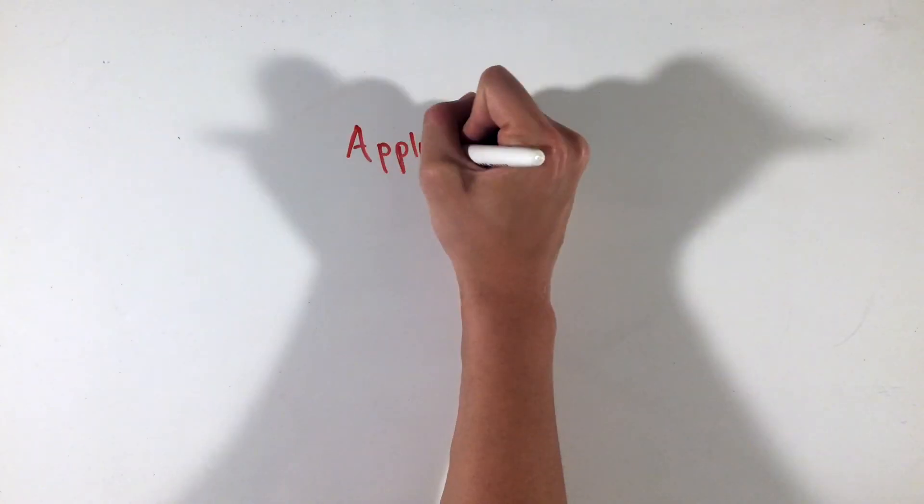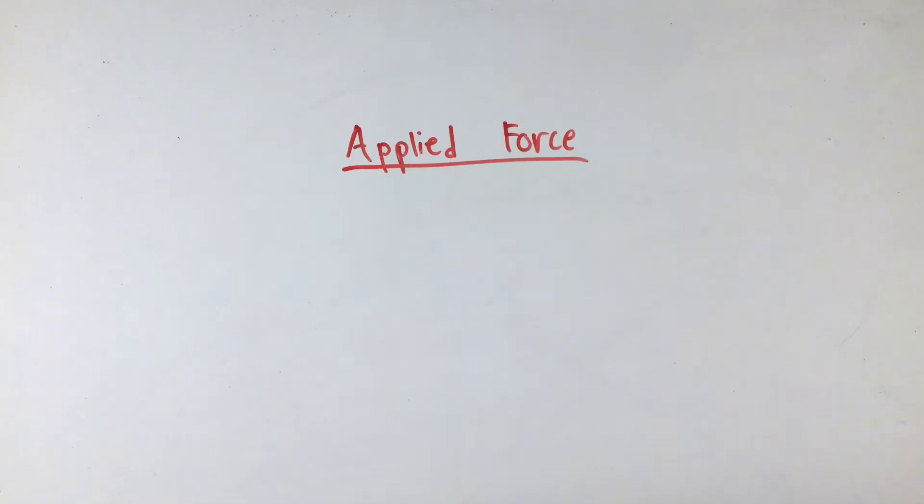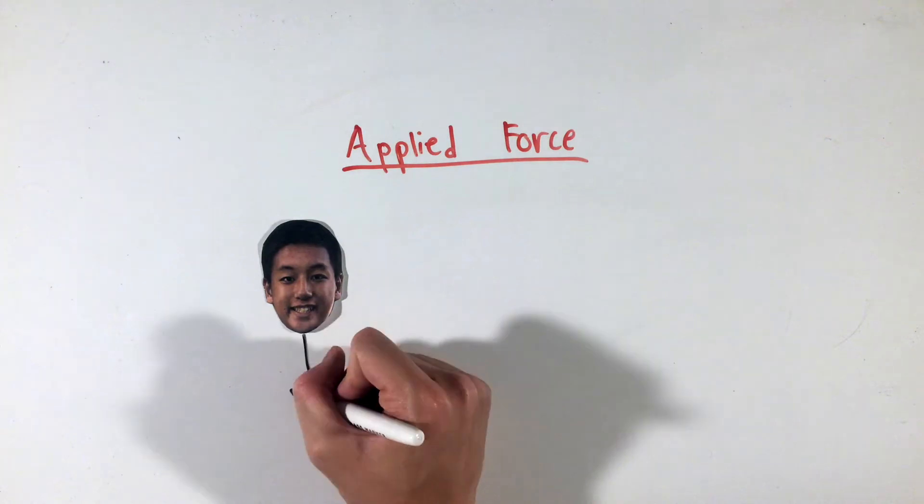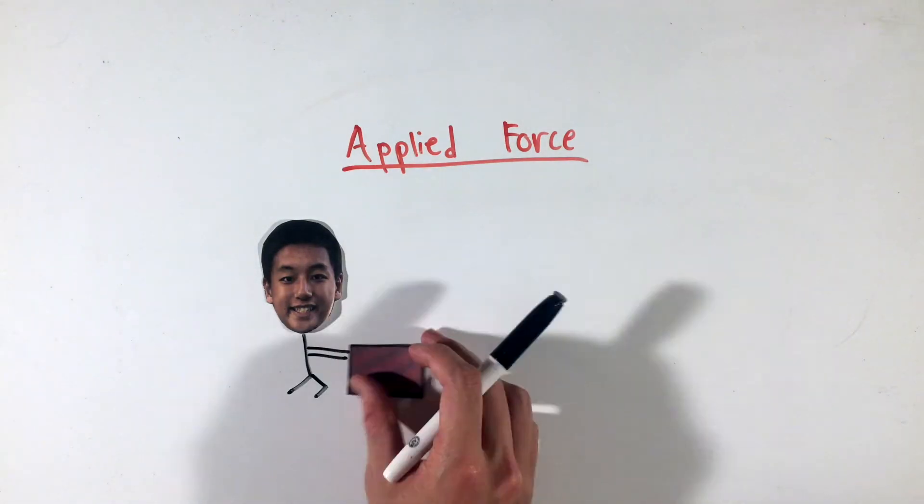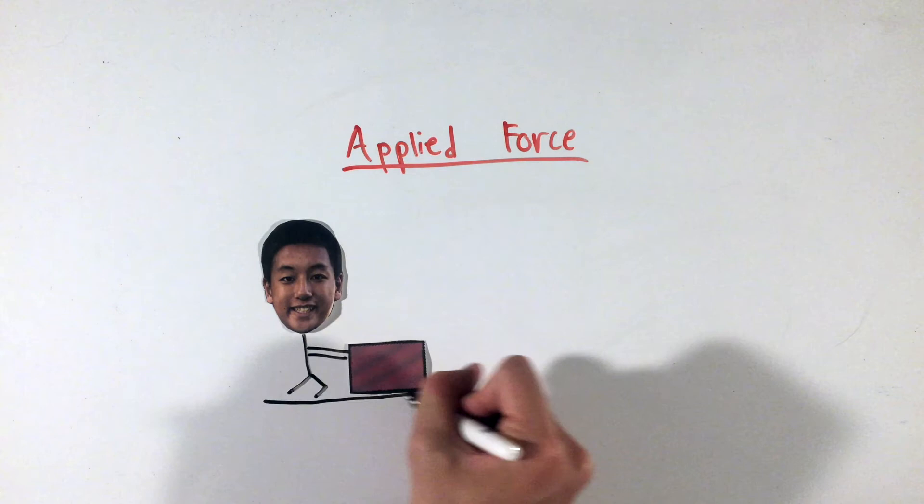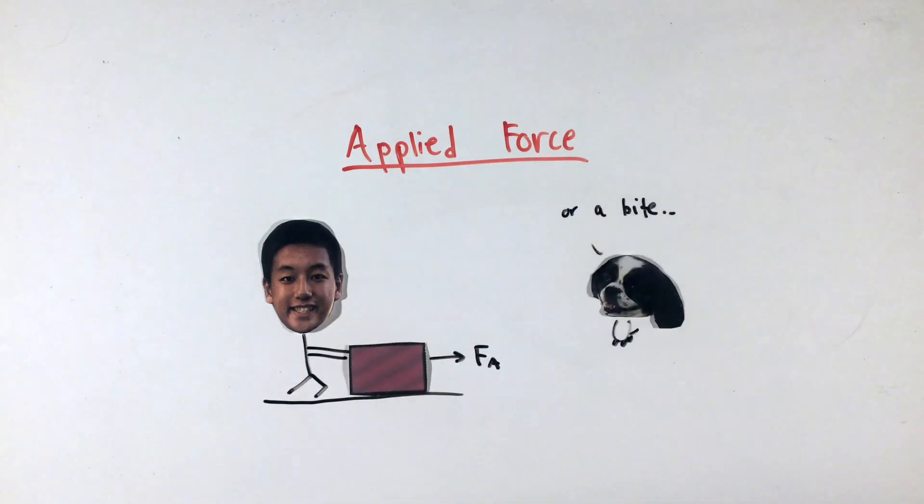The first and most basic type of force you'll encounter is the applied force, or any force that is normally applied by a human or animal. This could be a pull, a lift, a kick, a punch, or a press, but the criteria is really quite general and all-encompassing.